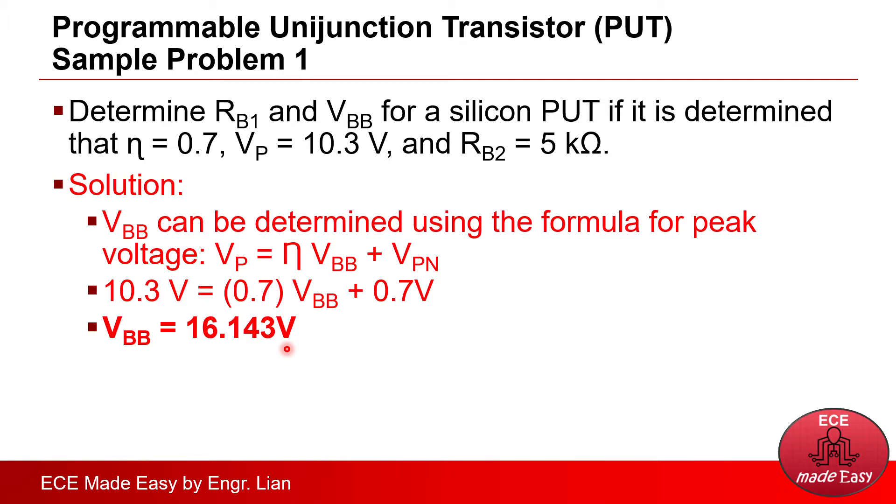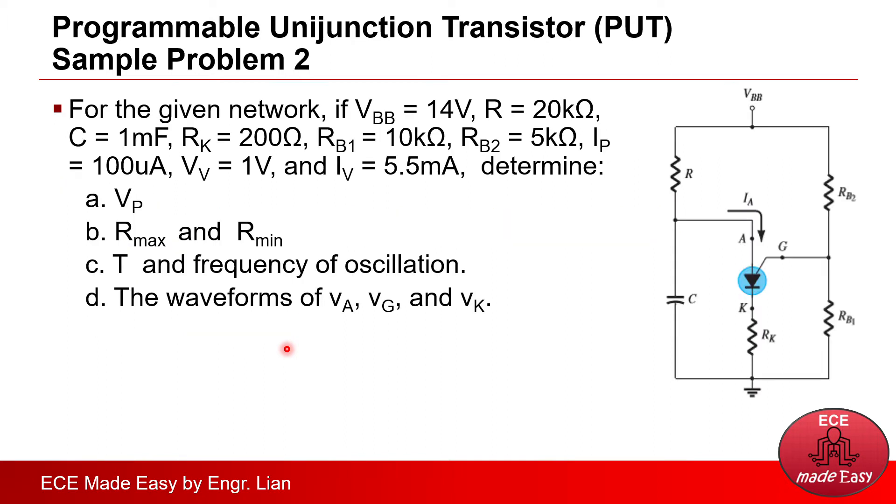So that's all for problem number one. Now let's proceed to problem number two. For the given network, if VBB is 14 volts, R equals 20 kilo ohms, the capacitance is 1 millifarad, RK is 200 ohms...